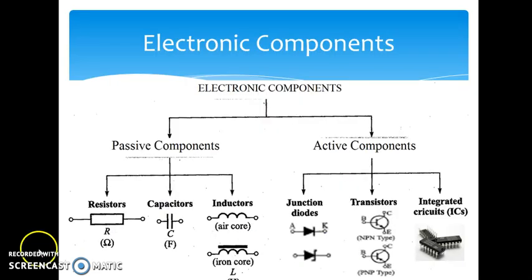Electronic components are classified into two categories, namely passive components and active components. The three basic passive elements used in electronic circuits are resistor, capacitor and inductor. They play a very important role in how an electronic circuit behaves.